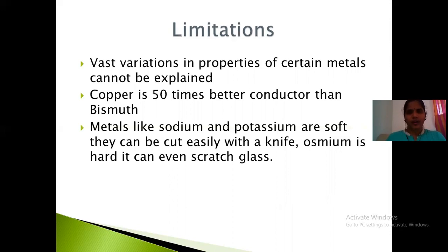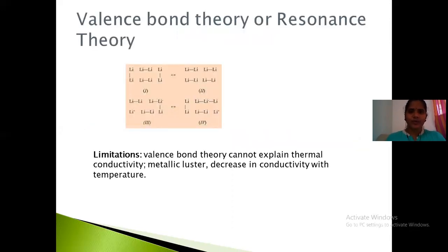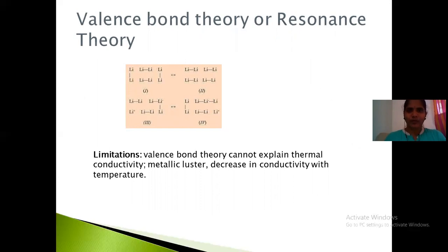To overcome these drawbacks, other theories were proposed. The second theory, which proposes a resonance structure for the metal crystal lattice, is the valence bond theory. According to the valence bond theory, the metallic bond is considered covalent in origin rather than ionic as in the free electron model, which only explained the attractive force holding electrons and kernels together.